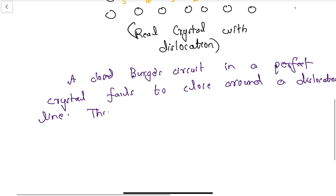This closure failure is denoted by the Berger's vector. This is another way of looking at the Burgess vector.